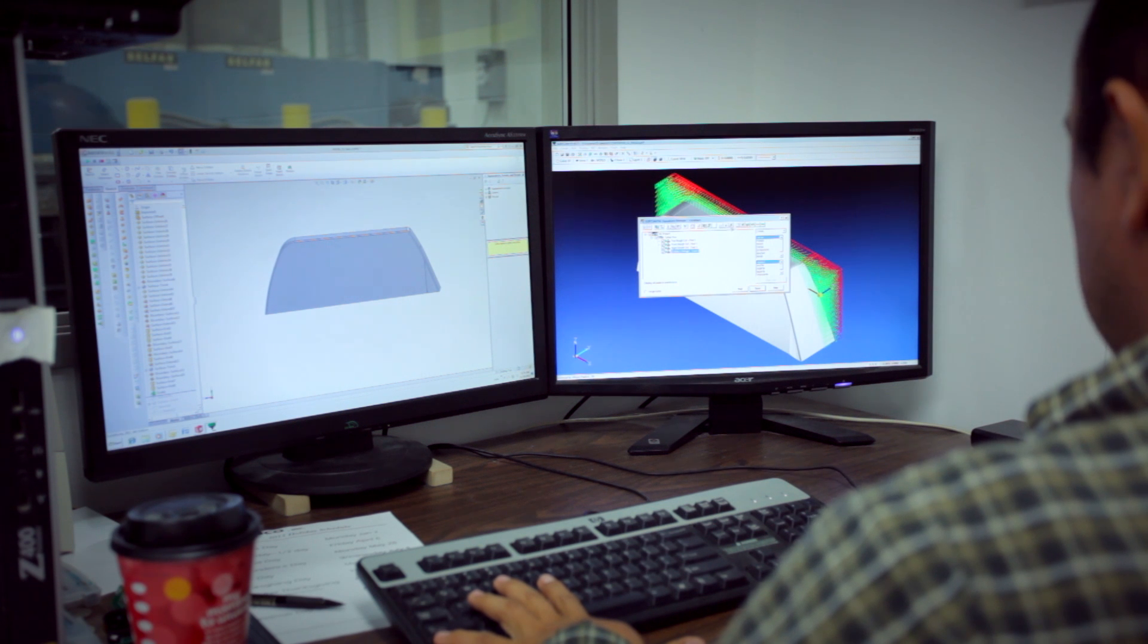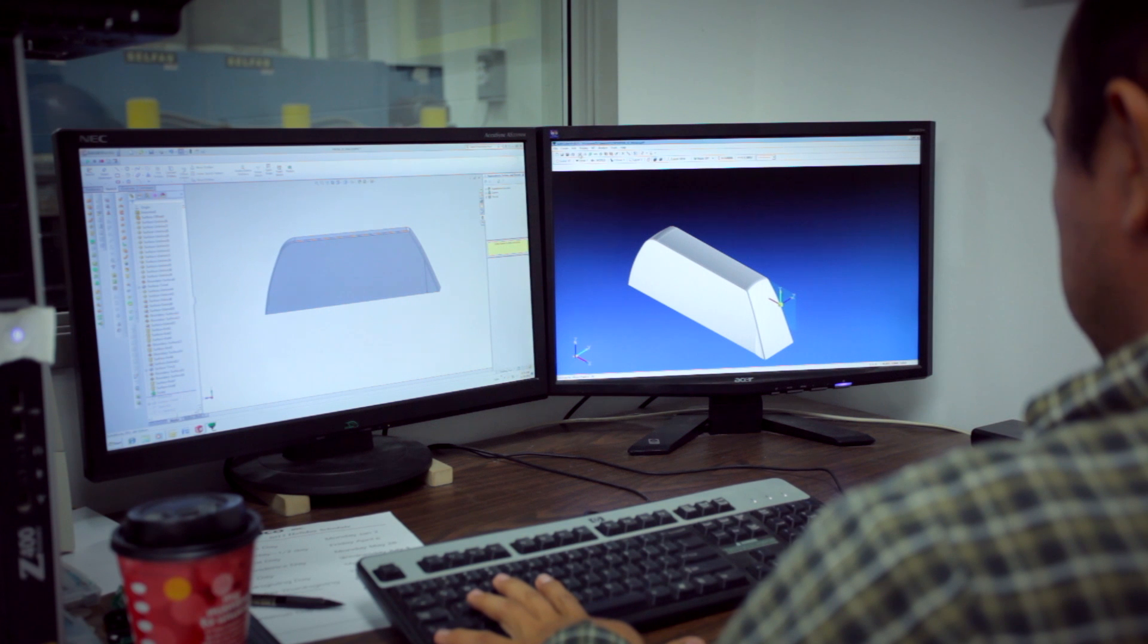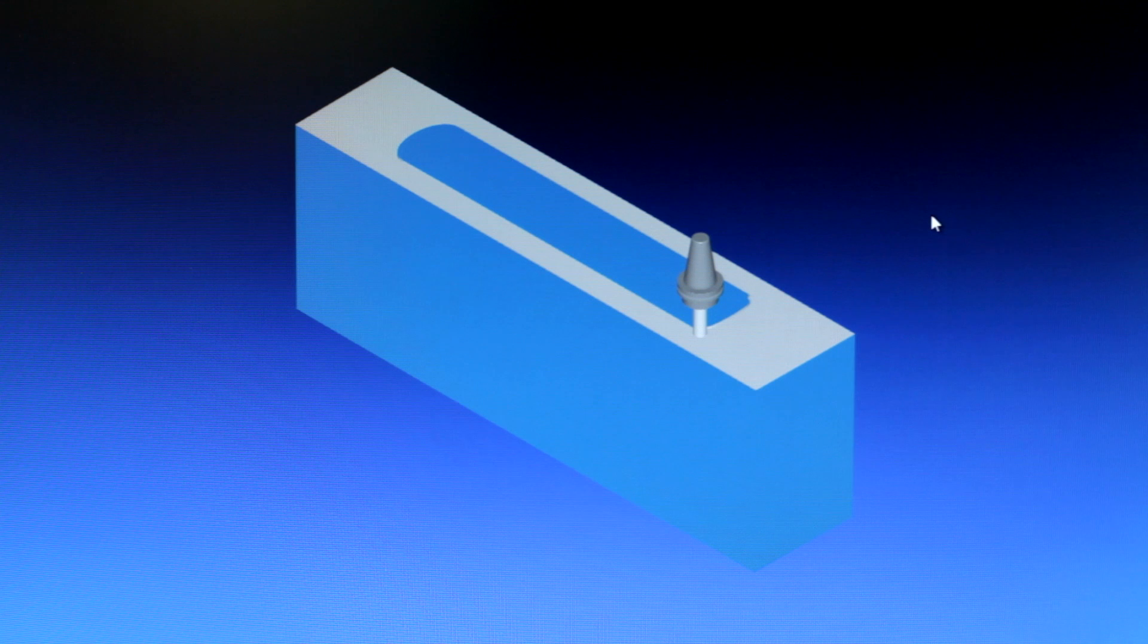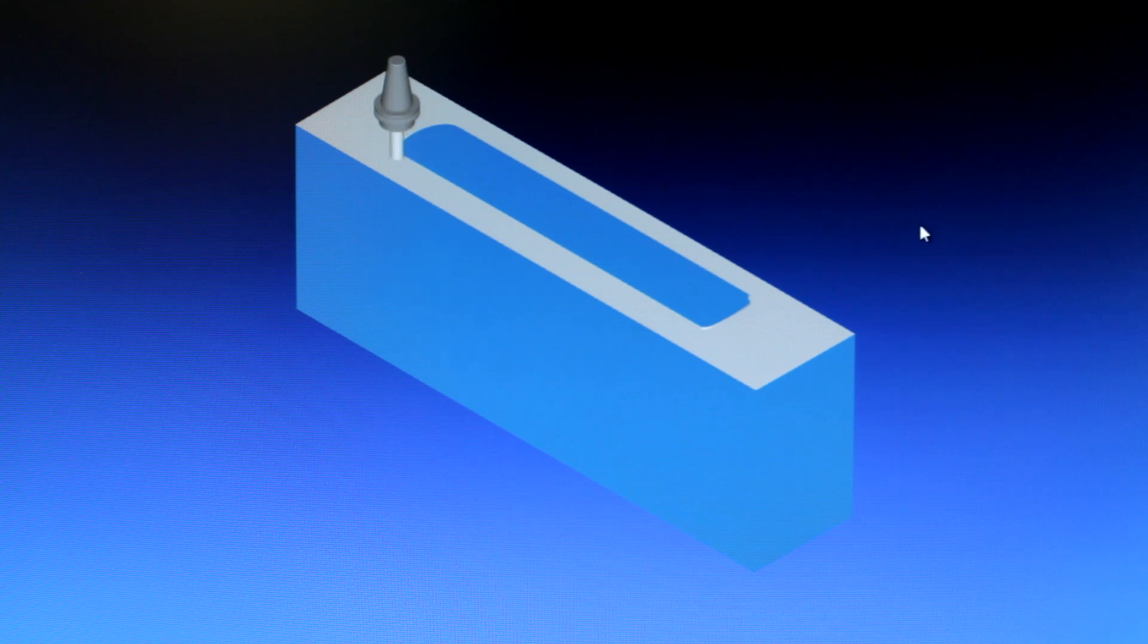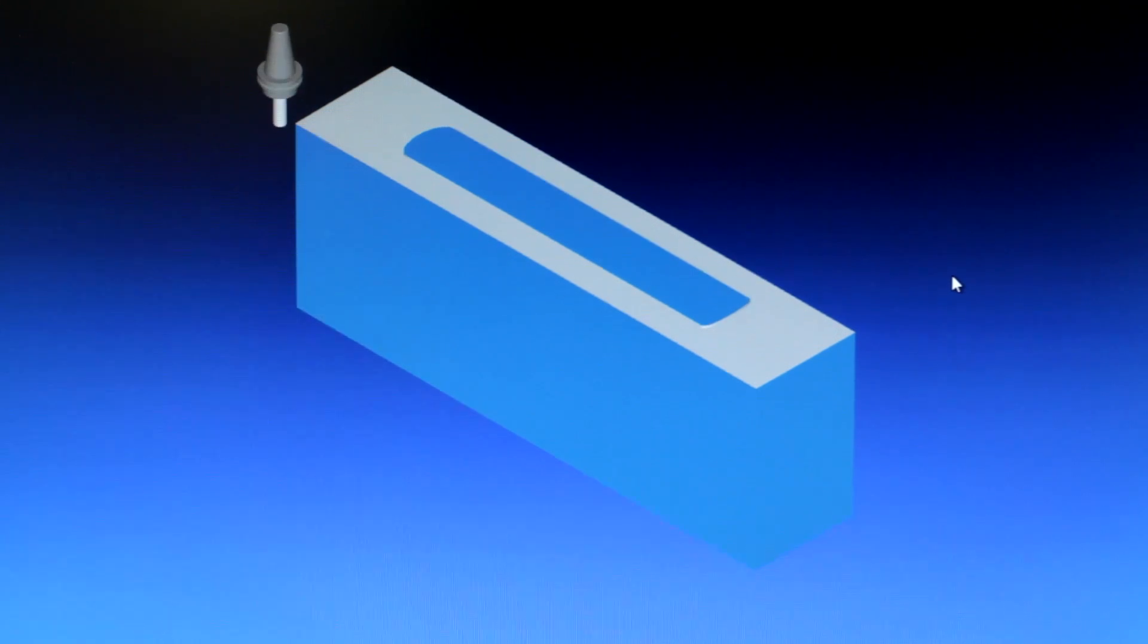First, using SOLIDWORKS computer-aided design, we take your part geometry and use it as the basis for the composite thermoforming tool. This requires planning how the plastic sheet will form, adding room to trim the part, providing vacuum channels, and shrinkage factor compensation.